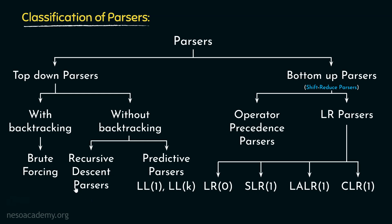We didn't really go through why it is named recursive descent parsers. We have seen how it works — basically all the non-terminals are converted into respective functions and how the entire parse tree is being created. Yet we don't really know why it is named like this. Let me clear that out for you.